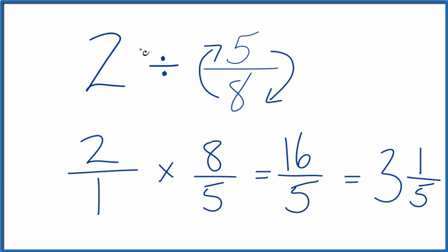So in answer to our question, 2 divided by 5 eighths is either 16 fifths or you could call it the mixed number 3 and 1 fifth.